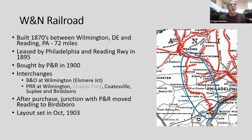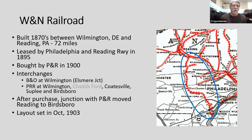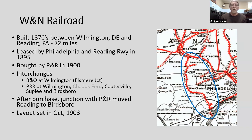The Wilmington Northern Railroad was built in the 1870s between Wilmington, Delaware and Reading, Pennsylvania — about 70 miles. In 1895 it was leased by the Philadelphia and Reading Railroad, eventually called the Reading Company — familiar from Monopoly. It was bought by the P&R around 1900. Though it remained somewhat separate, it was still listed as the Wilmington and Northern in timetables up through the 1920s–1930s. It has many interchanges, including with the B&O at Wilmington and five with the Pennsy — Dave got four of the five.